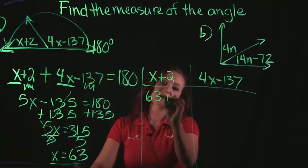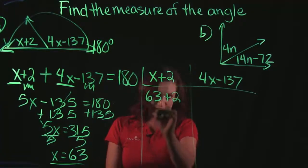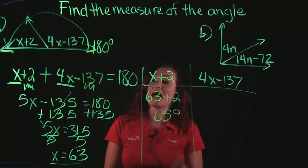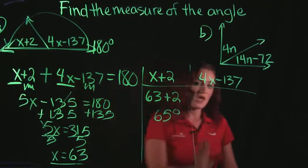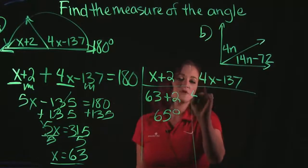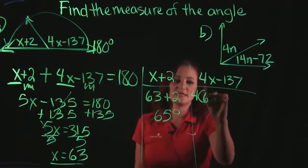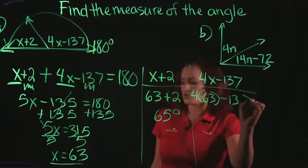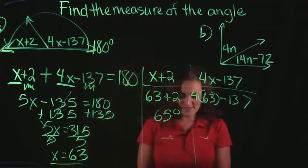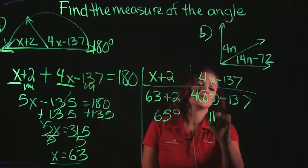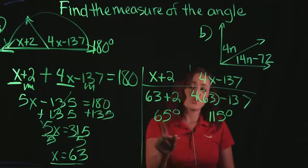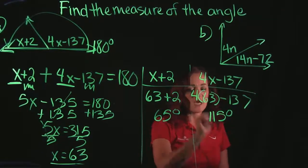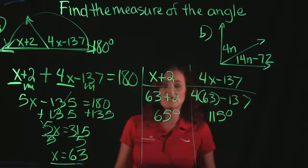So I'm going to plug in 63 for x. So we do 63 plus 2, which gives us 65. That means this angle over here is 65 degrees. Doing the same thing for the second angle. So we do 4 times 63 and then minus 137. And when I plug that into the calculator, I get a total of 115 degrees. So one angle is 65 degrees. The other angle is 115 degrees.